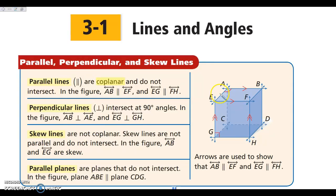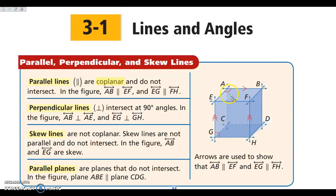Perpendicular lines are lines that intersect to form 90-degree angles, or right angles. If I look at AE, it is perpendicular to AB because we are shown this little right angle box here. AE is also perpendicular to AC, and AB will be perpendicular to AC as well. Everything in this little corner is going to be perpendicular.